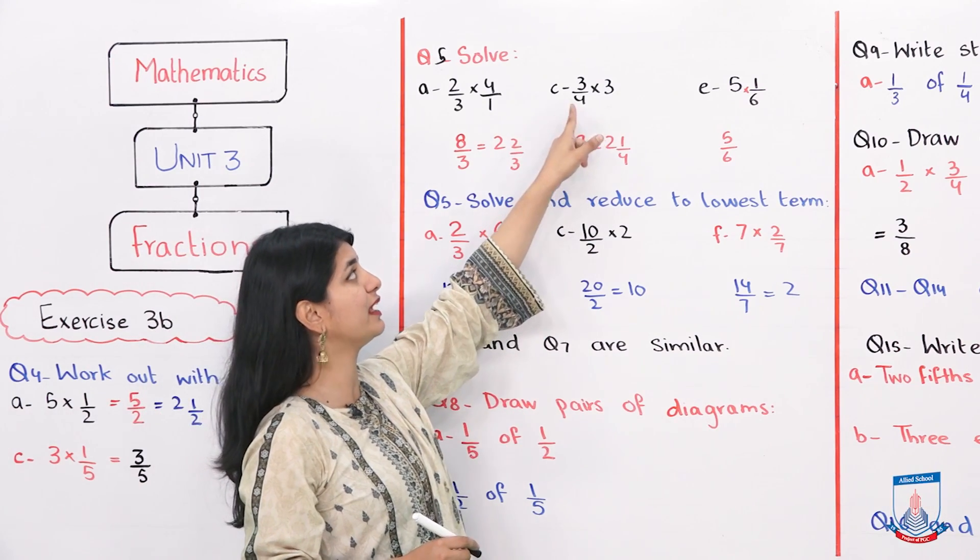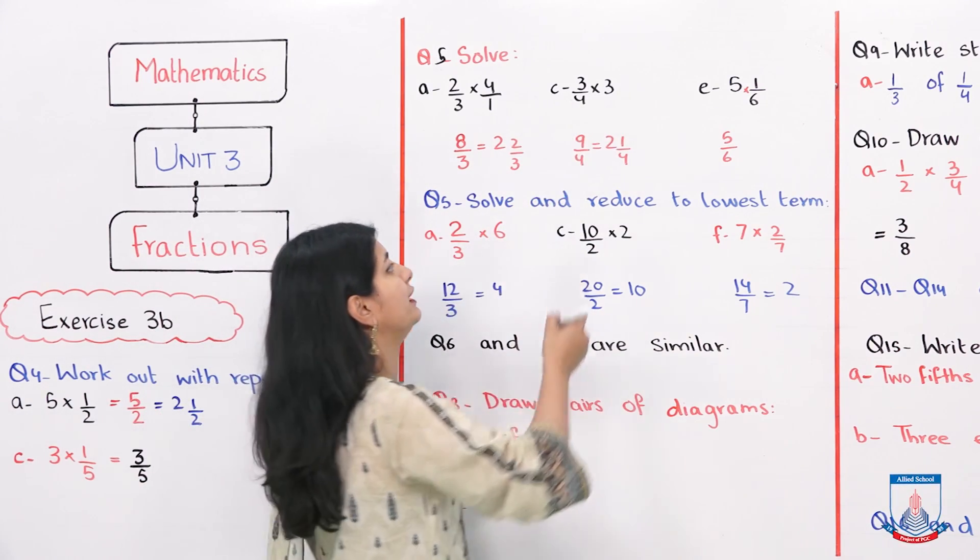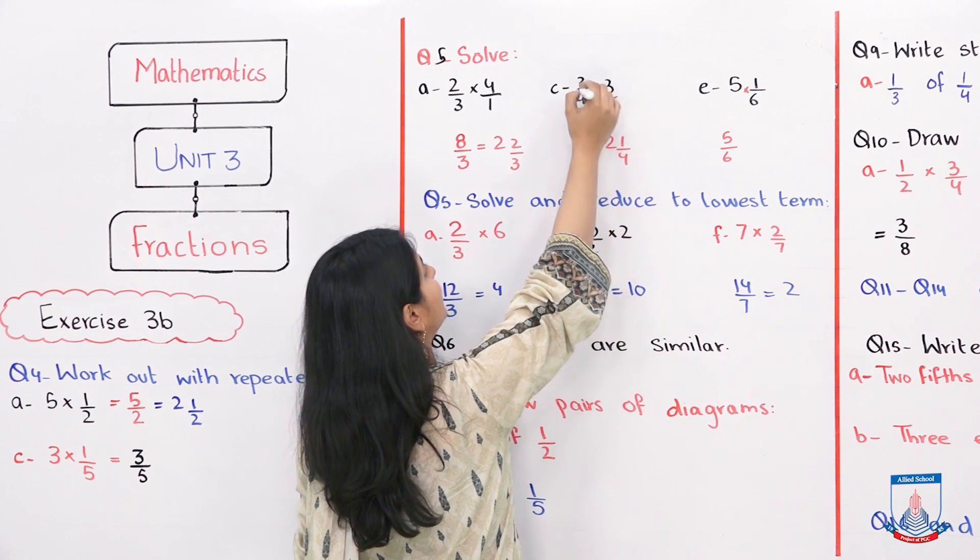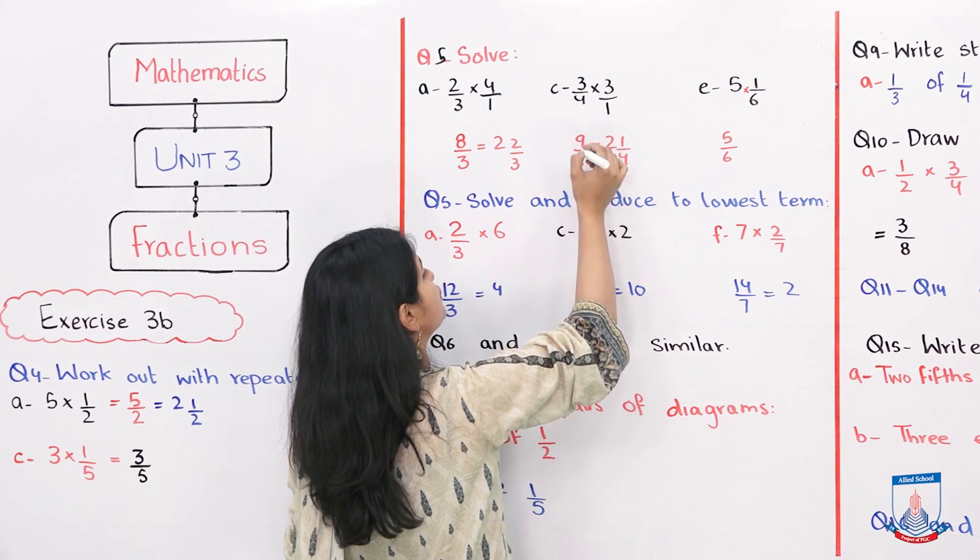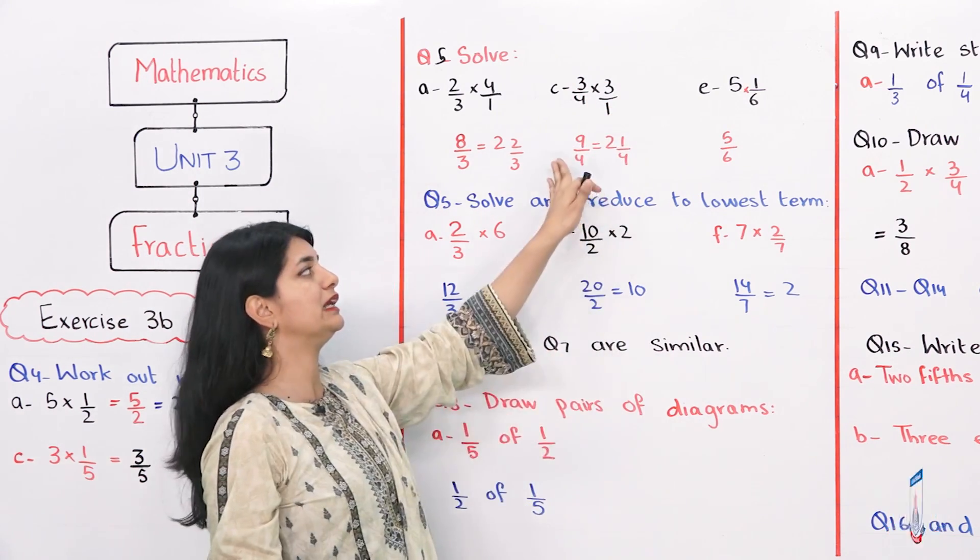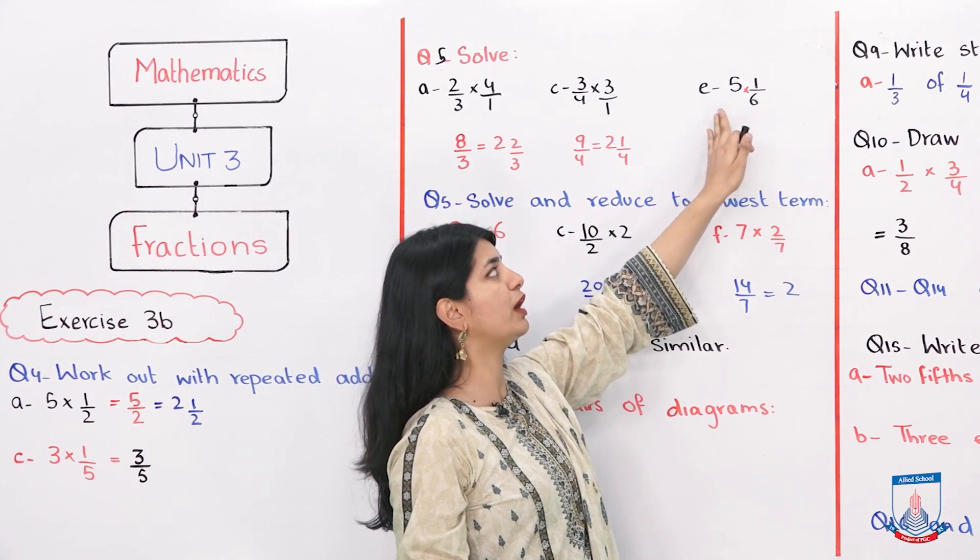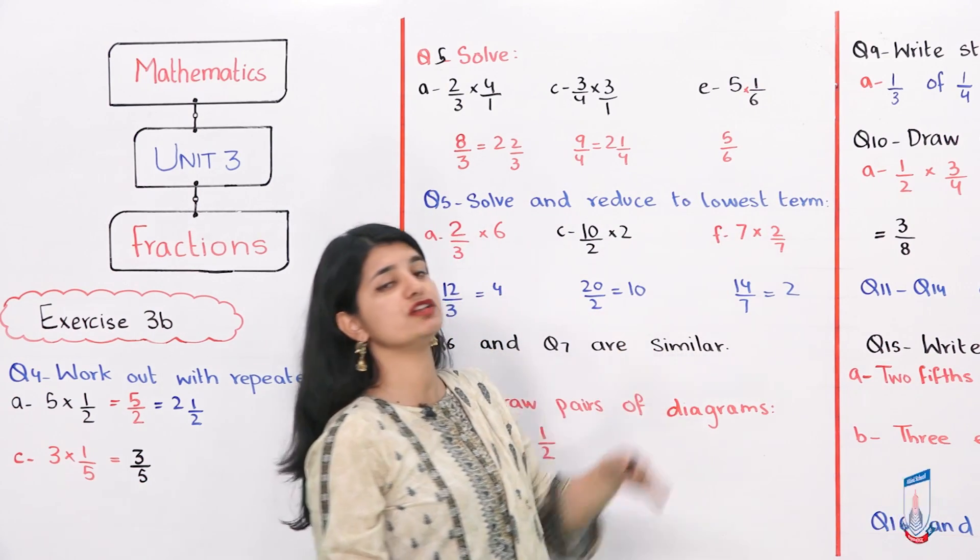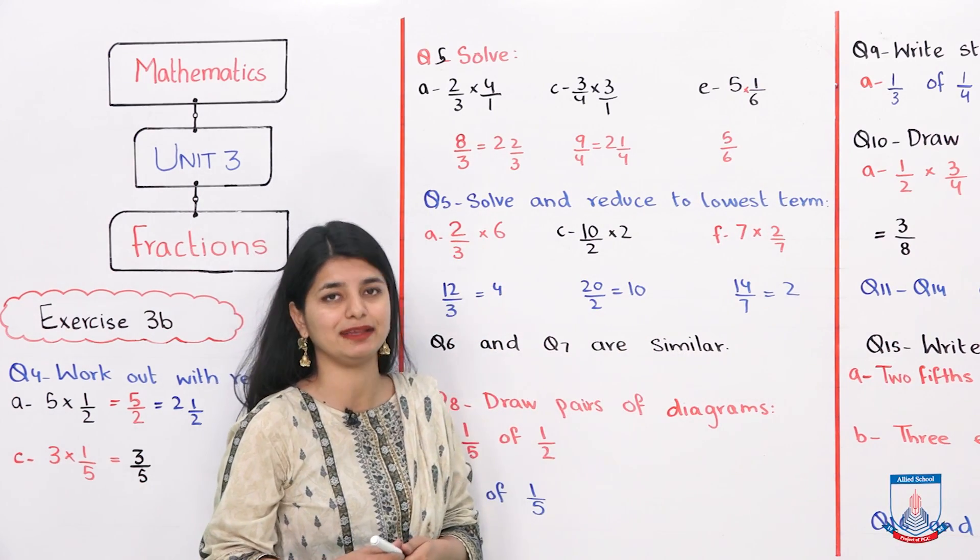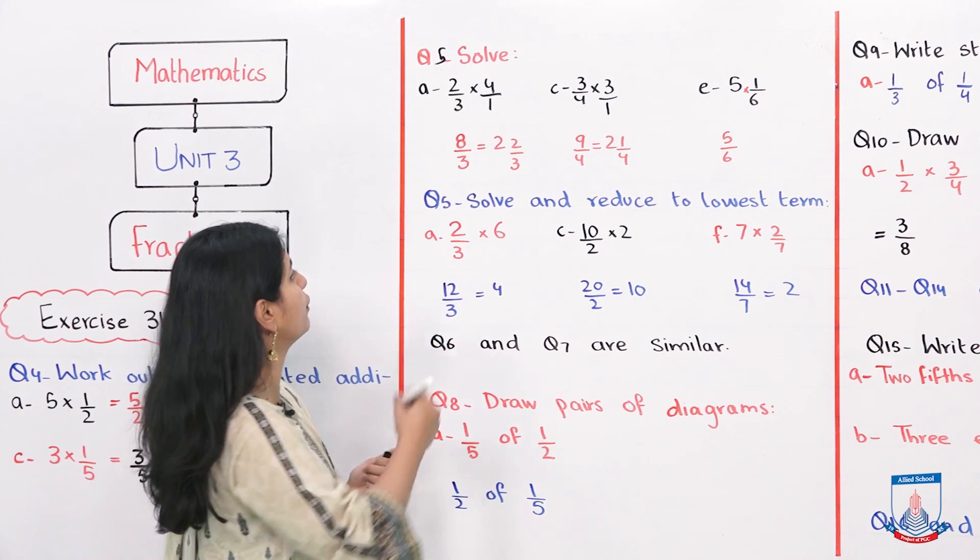If we see question C part, 3 over 4 into 3. Here we consider 1. 3 into 3 is 9, 4 into 1 is 4. 9 by 4 divided, then 2 whole 1 by 4 is your answer. In D part, 5 into 1 over 6 is 5 over 6 and 1 over 6 is your answer. Now let's look at question number 6.